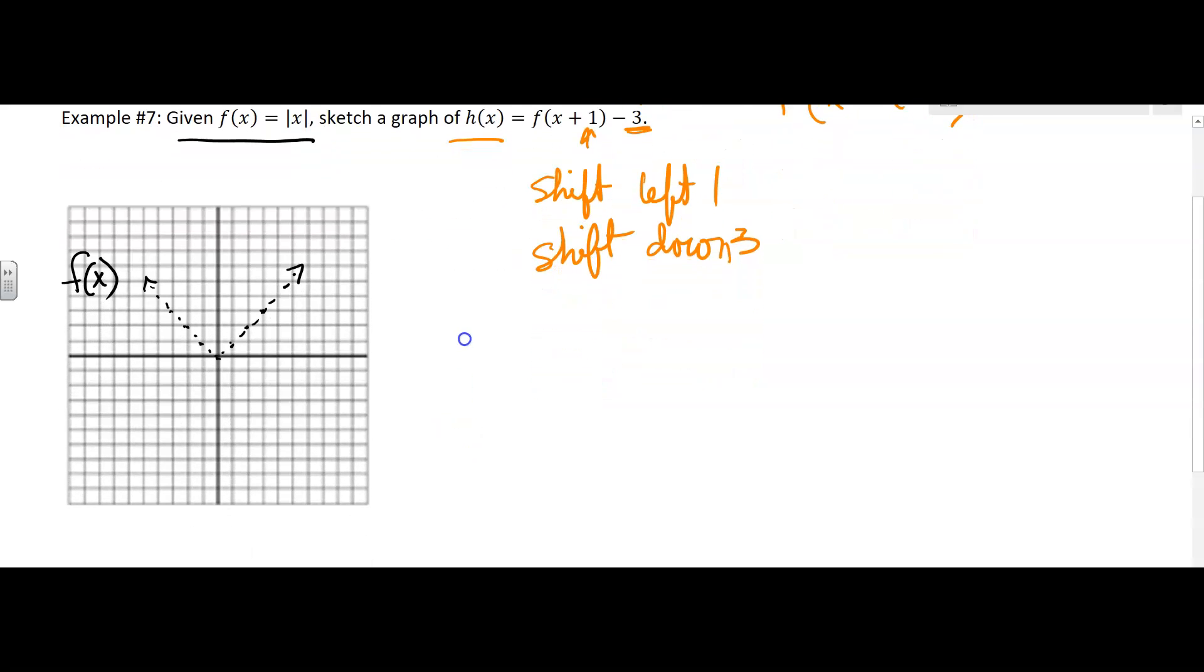Okay, now what you can do then is you can just take each point from the original graph and move them left one, down three. So a lot of times I like to start with the origin, and I'm going to go left one and down three.